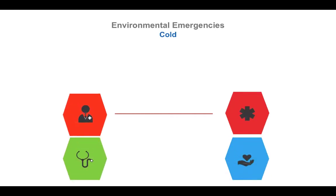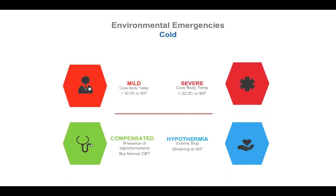When we talk about environmental emergencies and cold emergencies, we're talking about mild versus severe. Your cold body temperature, the CBT: mild would be greater than 90 degrees Fahrenheit or 32 degrees Celsius, and severe cold body temperature would be below 90 degrees Fahrenheit. Your patient might compensate, showing signs and symptoms of cold exposure, but those hypothermic patients are the ones that stop shivering at around 90 degrees — that's where you have to start looking more closely at what's going on.